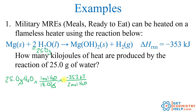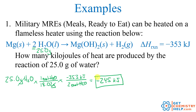That two comes from the coefficient in the balanced equation. Putting it all in the calculator: 25.0 divided by 18.02 times negative 353 divided by 2. With three significant digits (the fewest), the answer is negative 245 kilojoules — the amount of energy released when reacting 25.0 grams of water in this reaction.